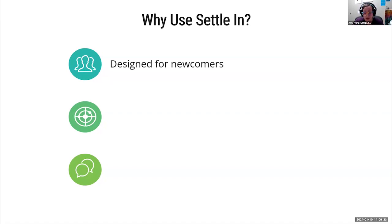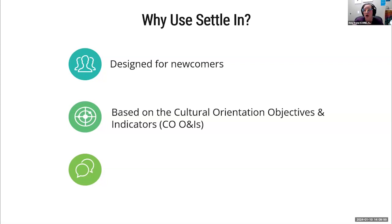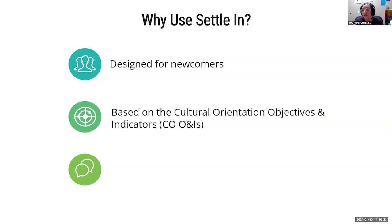All of the information on Settle In is based on the Cultural Orientation objectives and indicators — those COONIs. If you work in cultural orientation, you know those COONIs are the guideposts, the framework for providing education pre-departure and post-arrival to refugees resettling in the United States. The information on Settle In is very broad and meant to be used nationwide. In order to cover the whole United States, sometimes that information is not deeply detailed. However, you can use Settle In resources for that broad foundational information and then add your additional local information when you are working with newcomers.